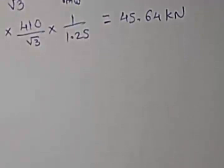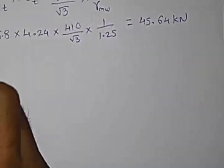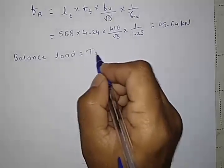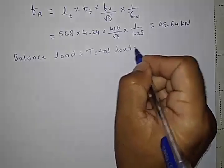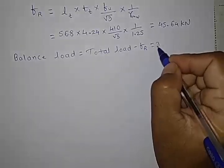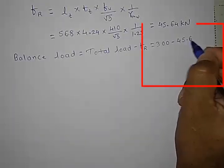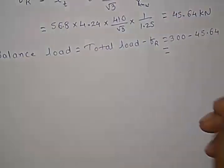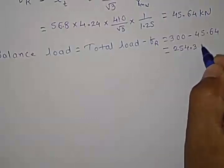Now this is the load can be resisted, but you need to resist the load that is of around 300 kN. So we just need to check what is the balance load to be. We need to consider. So we can just write down here, balance load equals total load minus FR. So total load is 300 and minus 45.64. So you will get this one around 254.36 kN.